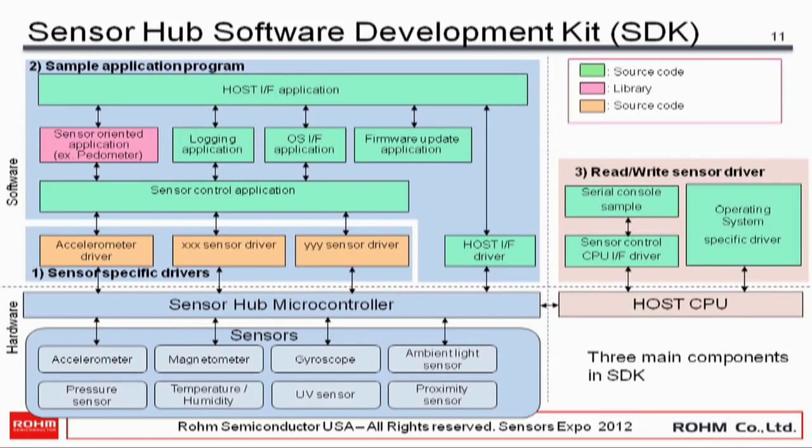The SensorHub processor comes with an SDK — a software development kit — comprising three pieces: sensor-specific drivers (source code provided, allowing you to change sensors), the sensor application and host interface (source code also available so you can target any host processor), and a library-form algorithm for the pedometer and state detection. Additional software is available on the Android or OS-dependent application layer.